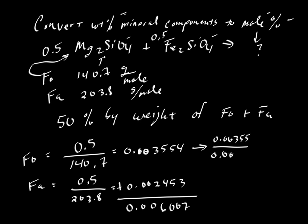And that would be divided by 0.006007. And if you carry all that out, multiply this by 100, if you want to get a percent instead of a fraction, then this will be equal to 59.16%. This is the mole percent of forsterite.